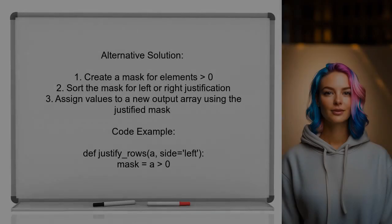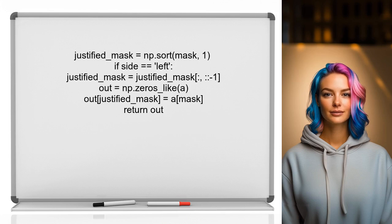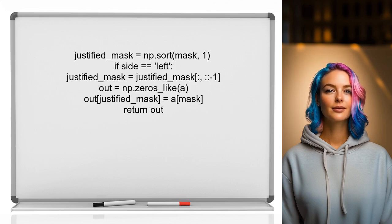An alternative solution provided by a user involves using a vectorized approach with masks in NumPy. First, create a mask for elements greater than zero. Then, sort this mask to justify the elements either to the left or right. Finally, use this justified mask to assign values into a new output array.